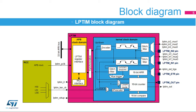The low-power timer features an encoder mode function that can be used to interface with incremental quadrature encoder sensors using the peripheral's LP-TIM-IN1 MUX and LP-TIM-IN2 MUX inputs. Both inputs feature glitch-filtering circuitry.